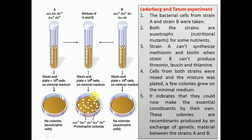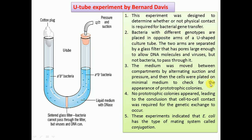This indicates they could now make the essential constituents on their own. These colonies are recombinants produced by an exchange of genetic material between strain A and strain B. The question then arises whether or not physical contact is required for bacterial gene transfer or conjugation. To answer that, Bernard Davis performed the U-tube experiment, popularly known as the Davis tube experiment.